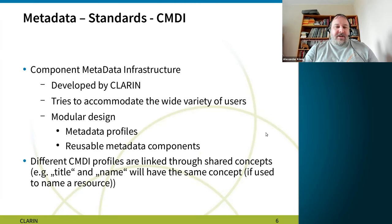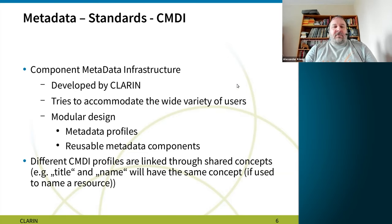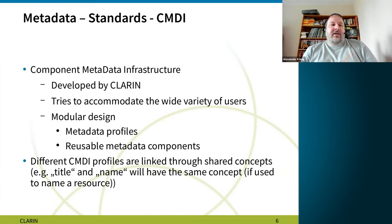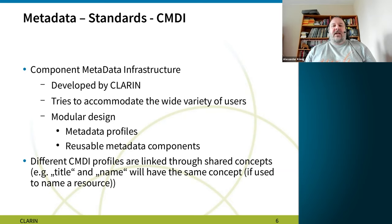Coming from CLARIN, I have to talk about CMDI — the Component Metadata Infrastructure, first developed by CLARIN relatively early on, maybe eight or more years ago. The idea of CMDI is to accommodate a wide variety of users. Rather than having one standard to rule them all and forcing everybody to use the same metadata fields, CMDI is a compromise: everybody uses CMDI, but everybody's CMDI can be slightly different while still remaining compatible.